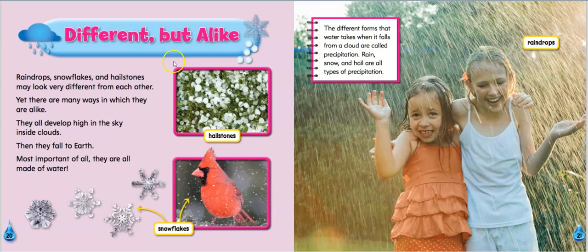Different but alike. Raindrops, snowflakes, and hailstones may look very different from each other, yet there are many ways in which they are alike. They all develop high in the sky, inside clouds. Then they all fall to the earth. And most important of all, they are all made of water. The different forms that water takes when it falls from a cloud are called precipitation. Rain and snow and hail are all types of precipitation.